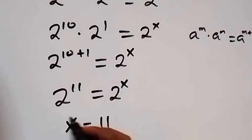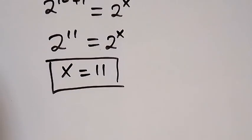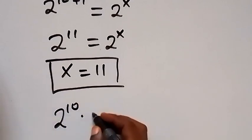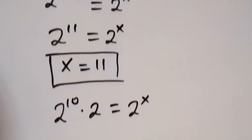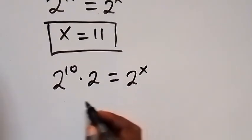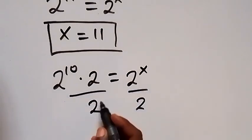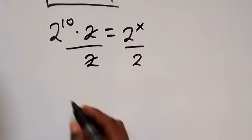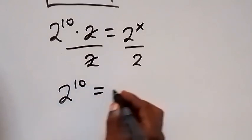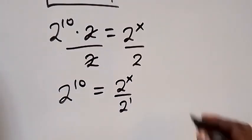Now the next method: from 2 raised to power 10 times 2 equals 2 raised to power x. We can write 2 raised to power x over 2 raised to power 1, such that 2 cancels, and this leaves 2 raised to power 10 equals 2 raised to power x divided by 2 raised to power 1.